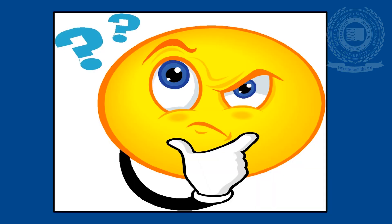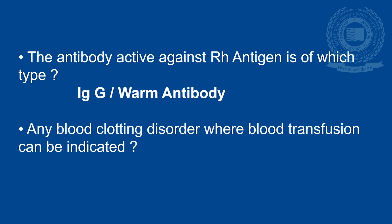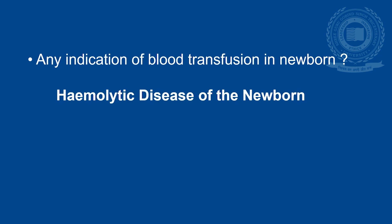Now let us spend a minute to think upon these questions. The antibody active against Rh antigen is of which type? It's IgG or the warm antibody. Any blood clotting disorder where blood transfusion can be indicated? Thalassemia. Any indication of blood transfusion in a newborn? It's hemolytic disease of the newborn. Today we covered the topic blood grouping, and next time we will be discussing about immunity. Keep learning, keep growing, see you next time.